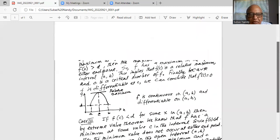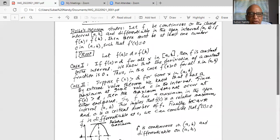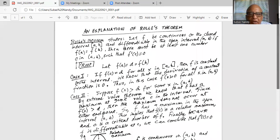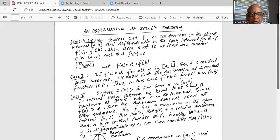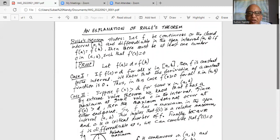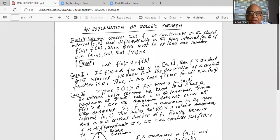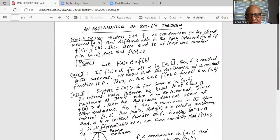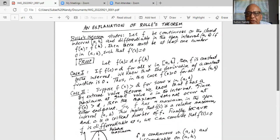So in the three cases, we proved that f being continuous on the closed interval [a, b] and differentiable in the open interval (a, b), and because f(a) is equal to f(b), then there must be at least one number c in the open interval (a, b) such that f prime of c is equal to 0. This is a very important theorem in calculus and we will discuss some problems using this theorem.